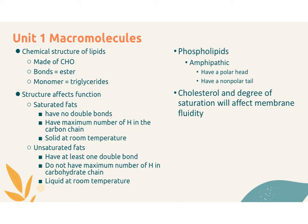Unsaturated fats, on the other hand, have at least one part of the carbon chain with a double bond. Because of that double bond, you're trading out hydrogens that were bound to the carbon and replacing them with a double bond between the carbons. This gives a little kink or bend in the tail, which makes them more liquid at room temperature, because the lipids can't pack as tightly together.